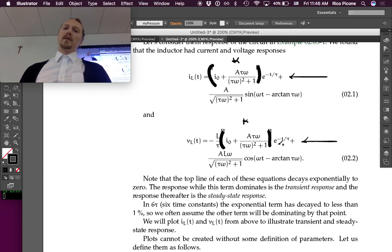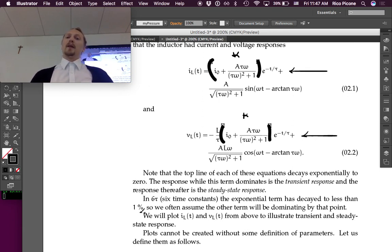The response while this exponentially decaying term dominates is called the transient response, and the response thereafter is the steady-state response. The transient response is not just this top line, because while this top line's happening, there's also this second line happening. But after a while, this top line becomes irrelevant - becomes so small that it's not important - so then the second line will dominate. In six time constants, the exponential term has decayed to less than one percent.